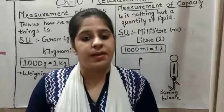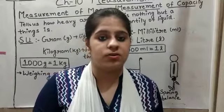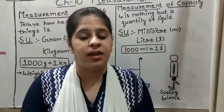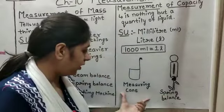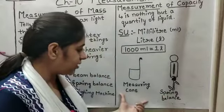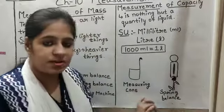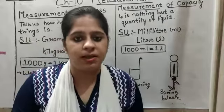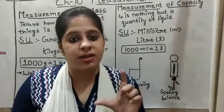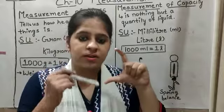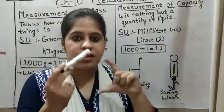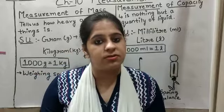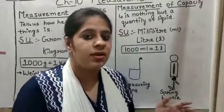In daily life, your parents go to fill their scooters with petrol — that is measured in litres. Milk is measured using measuring cans. The milkman uses measuring cans, and there are also measuring glasses with numbers marked on them and other measuring containers that you can see in daily life.